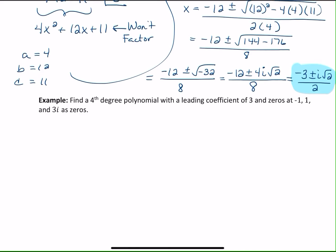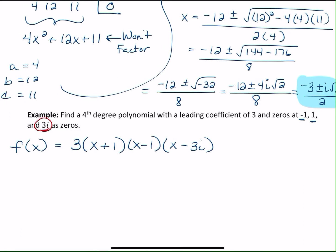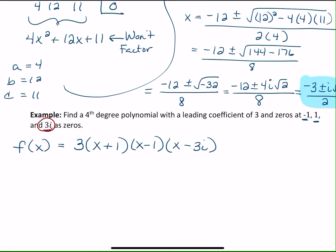It wants you to find a fourth degree polynomial with a leading coefficient of 3 and zeros at negative 1, 1, and 3i. So if you're writing the polynomial, we have a leading coefficient of 3. If I have a zero at negative 1, that's going to be a factor of x plus 1. At 1 would be x minus 1, and then at 3i, I'd have x minus 3i. But remember from before, these come in pairs. So if 3i is a zero, then negative 3i is also a zero. So that would be x plus 3i.